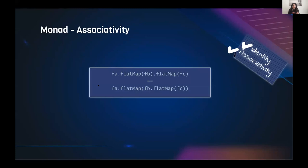For the associativity law, similar to monoid and semi-group but with flatMap: whether we call flatMap separately or combine two monadic computations in a single flatMap, the result should be the same. This ensures no side effects and that the order of flatMap operations doesn't change the result.